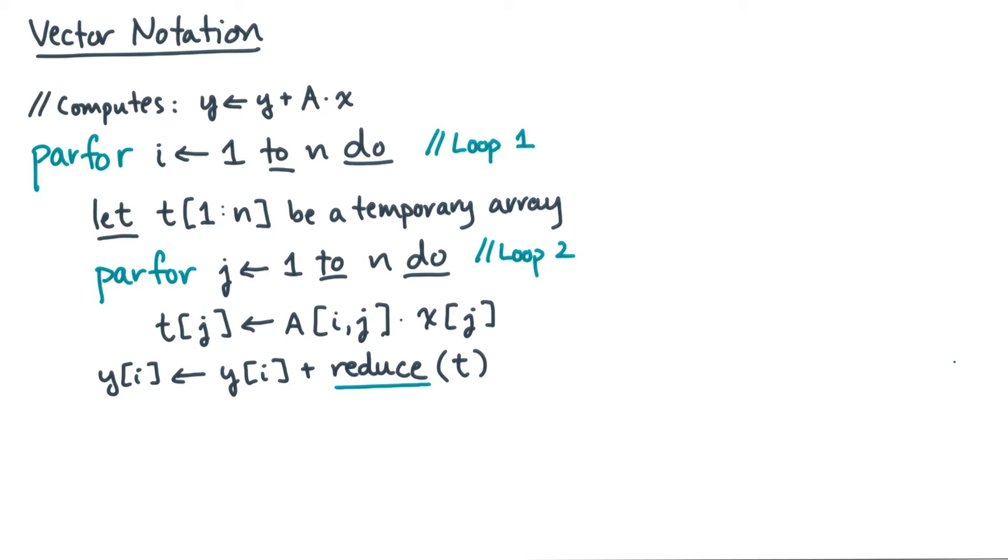This matrix vector multiply example gives us a chance to introduce a couple of pseudocode shortcuts. The shortcuts are all based on expressing operations on arrays as vector operations. You see a hint of that here. Notice the declaration of the temporary array t. I've used this vector slicing notation, that is indexing with a range of values, in this case 1 to n.